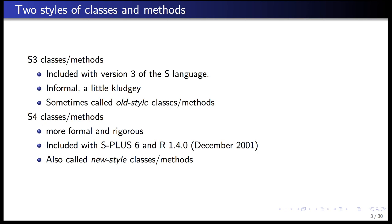There are two separate systems of object orientation in R, representing an evolution of the system across different versions of the language. The first system is called S3 classes and methods, which was included with version 3 of the S language. It's a very informal system — frankly a little kludgy — and sometimes referred to as old-style classes and methods. The main limitation is that new classes of data did not have a formal definition, so they could run into problems in more complicated situations.